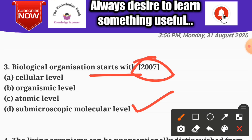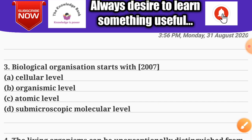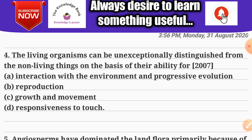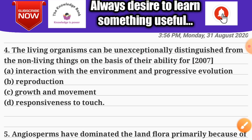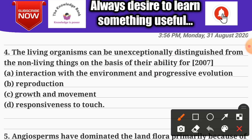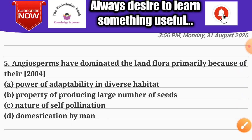Question number four: living organisms can be exceptionally distinguished from non-living things on the basis of their ability for — Options: A) interaction with the environment and progressive evolution; B) reproduction; C) growth and movement; D) responsiveness to touch. The correct answer is B — reproduction.